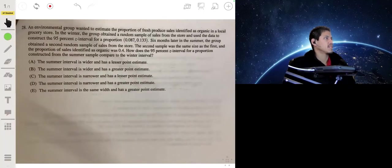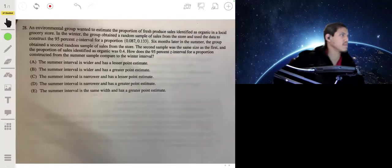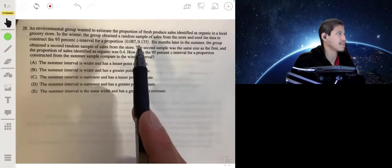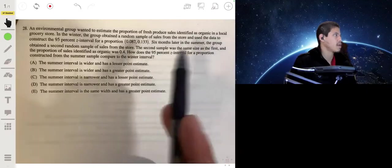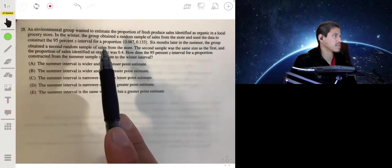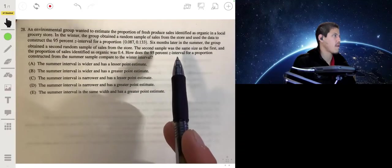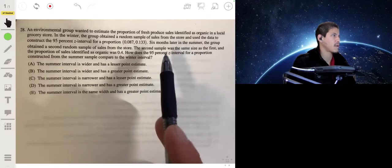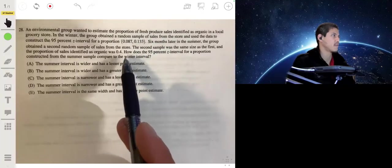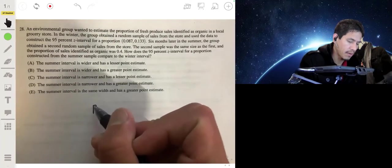An environmental group wants to estimate the proportion of fresh produce identified as organic in a local grocery store. In the winter, the group obtained a random sample of sales from the store and used the data to construct a 95% Z interval for a proportion and got 0.087 to 0.133. Six months later, the group obtained a second random sample of sales from the store. The second random sample is the same size as the first and the proportion of sales identified as organic was 0.4.